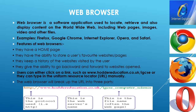The major web browsers are Internet Explorer, Google Chrome, Mozilla Firefox, Opera, and Safari. Most web browsers share different features, but traditionally there are a few common ones: they have a home page, the ability to store a user's favorite websites, they keep a history of websites visited, and give the ability to go backward and forward to websites opened. Users can either click on a link or type a URL manually in the address bar.